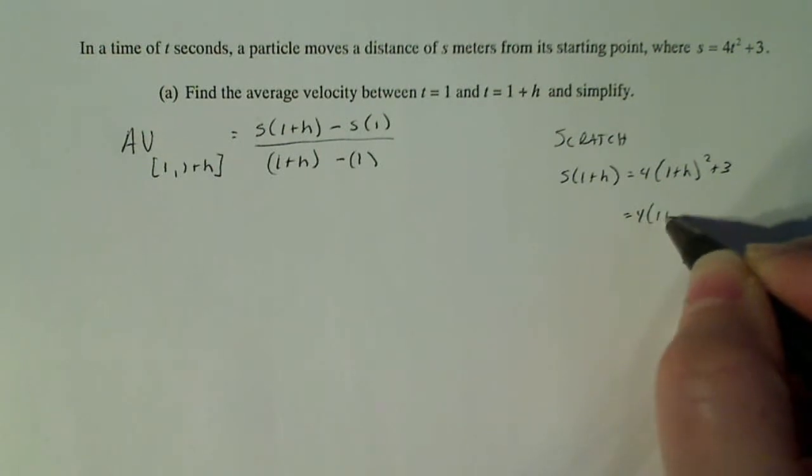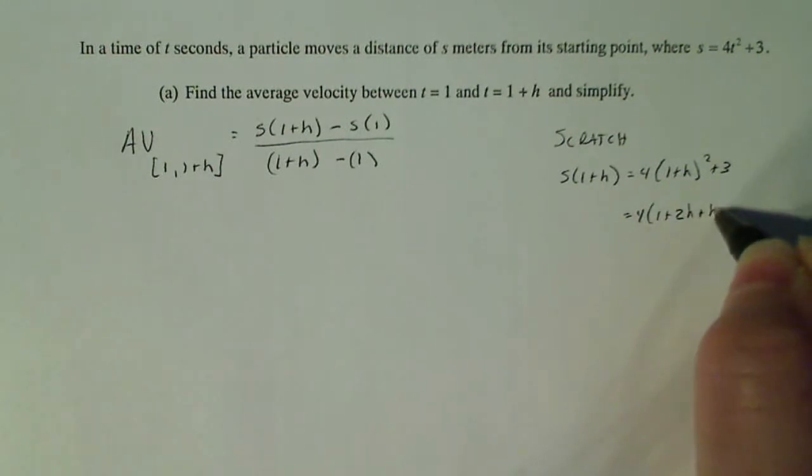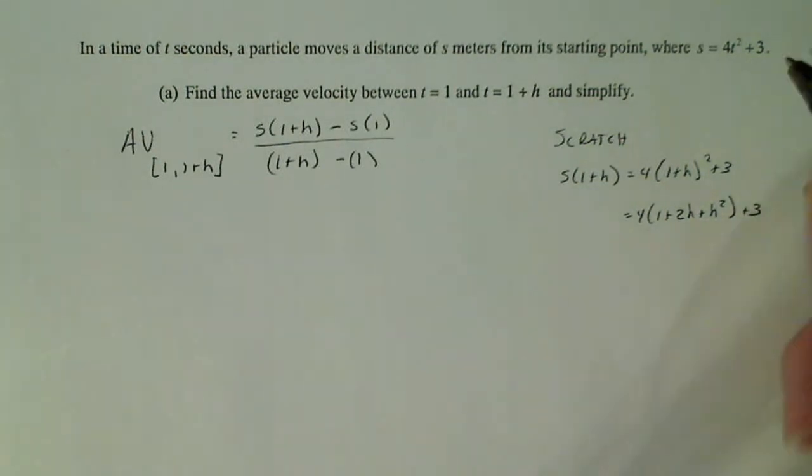4 times (1 plus 2h plus h²) plus 3. If you don't know how this comes about, just go somewhere else and do (1 plus h) times (1 plus h) and FOIL it.